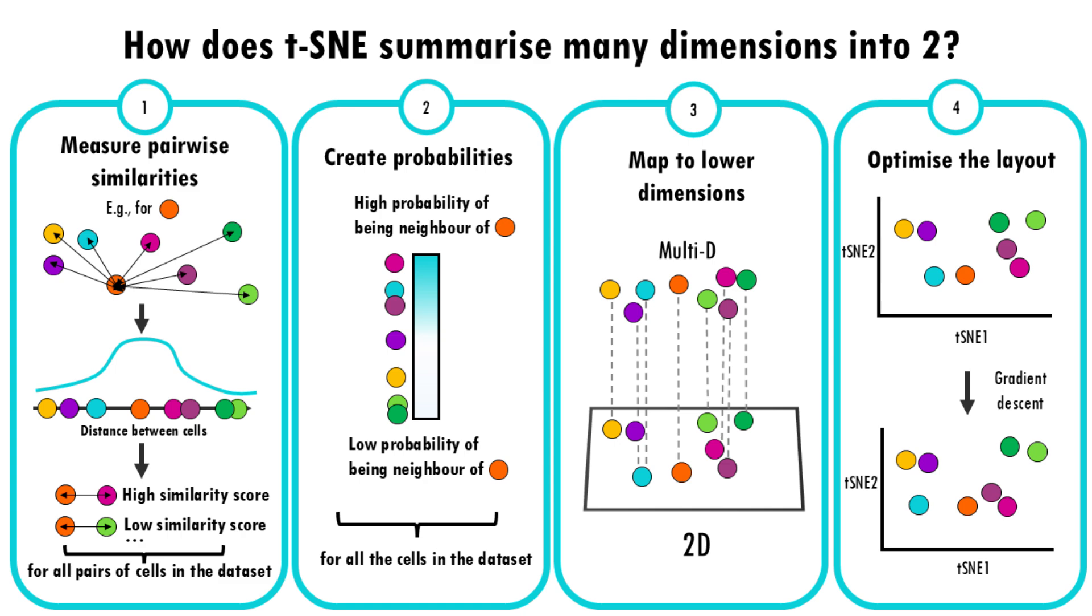The key math involves probabilities and optimization, but the goal is to create a map that reflects the relationships between the cells as closely as possible, just in fewer dimensions.